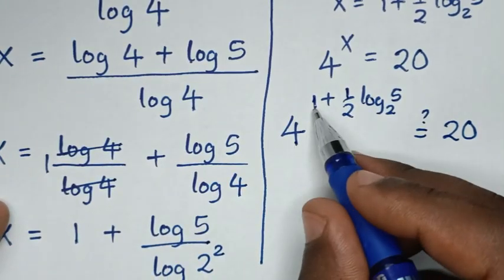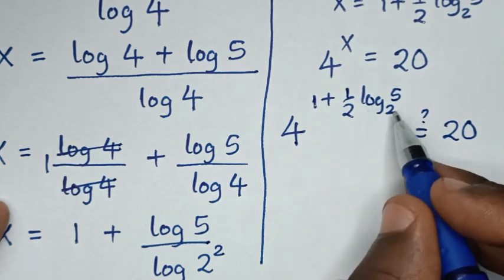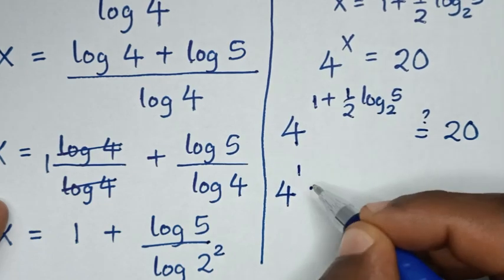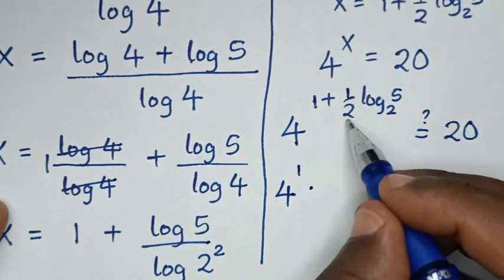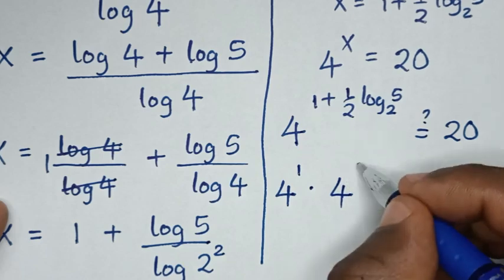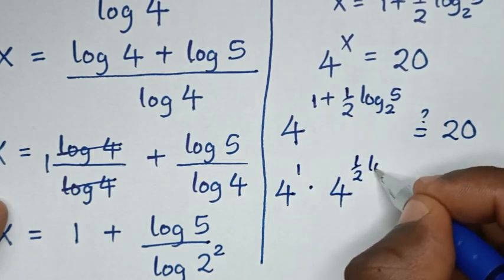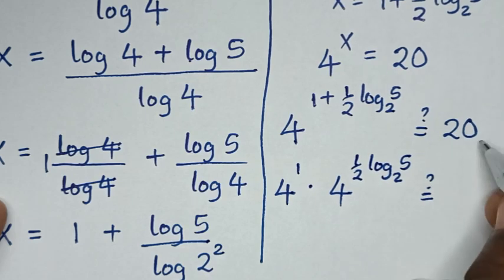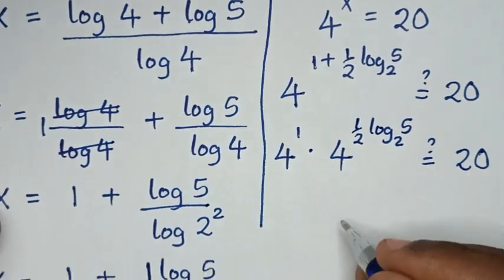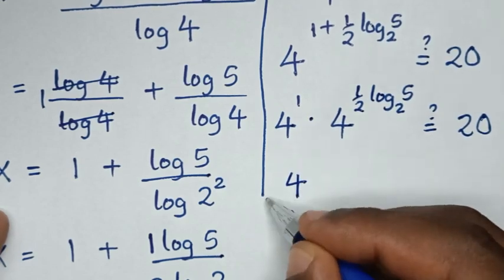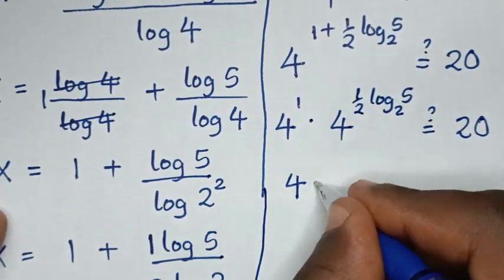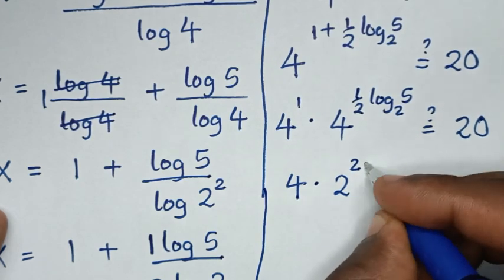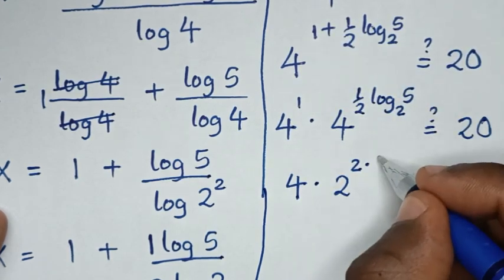So 4 to the power of 1 plus one-half log of 5 base 2 is the same as 4 to the power of 1, times 4 to the power of one-half log of 5 base 2. That is 4 times 4, where 4 is the same as 2 squared.